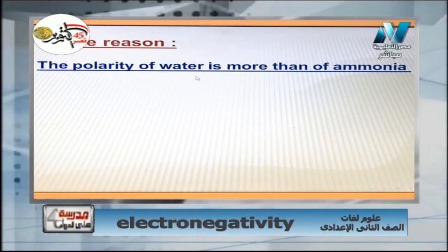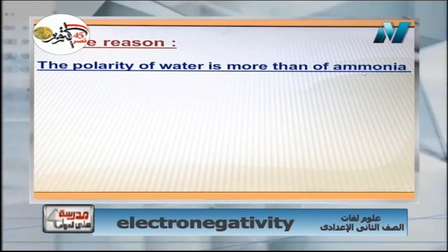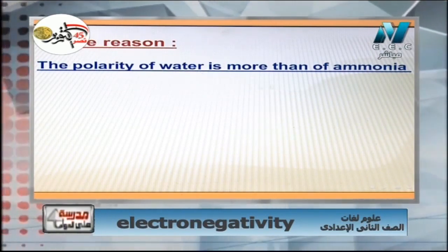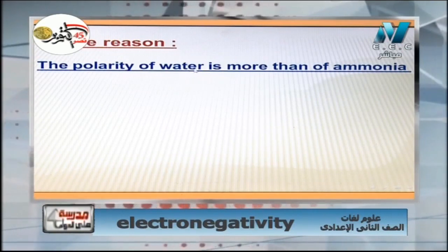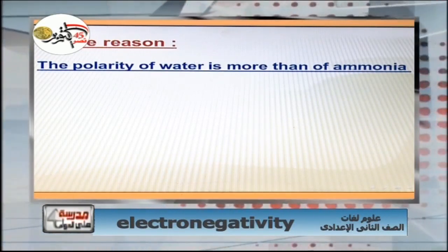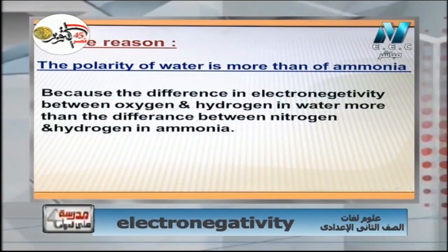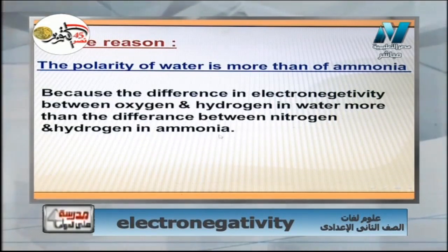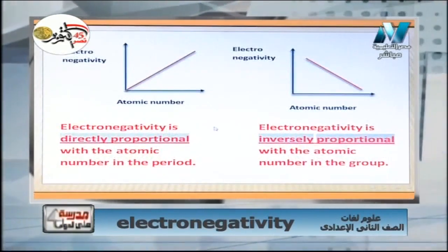Give reason: the polarity of water is more than ammonia. Both water and ammonia are polar compounds, but water is more polar. Water consists of hydrogen and oxygen; ammonia consists of nitrogen and hydrogen. The electronegativity of oxygen in water is higher than the electronegativity of nitrogen in ammonia. Therefore, the difference in electronegativity between oxygen and hydrogen in water is greater than between nitrogen and hydrogen in ammonia, so water is more polar than ammonia.